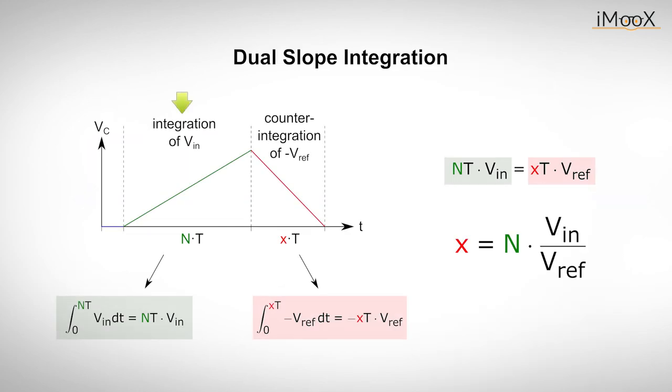The idea is to integrate the input voltage VIN over a fixed period of time. This time can be measured as a number of clock cycles with the period T. After a known number of clock cycles, the circuit starts a counter integration with a reference voltage Vref until the voltage at the capacitor again reaches zero. This will take an unknown amount of clock cycles with the same period T. If we count the number of clock cycles x during the counter integration, the reading of x will be proportional to the input voltage VIN and can be used as digital output value.